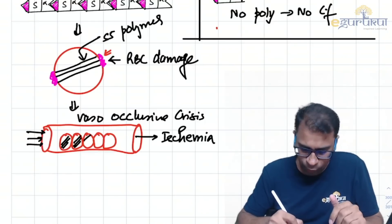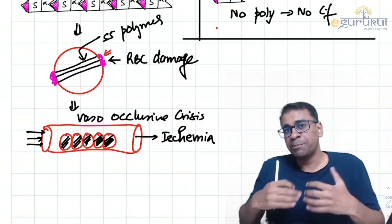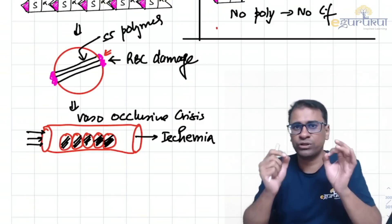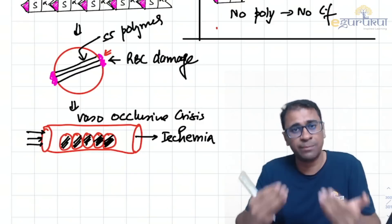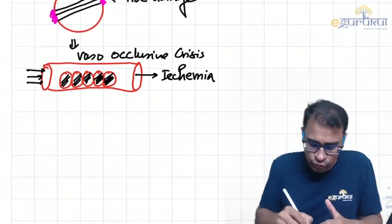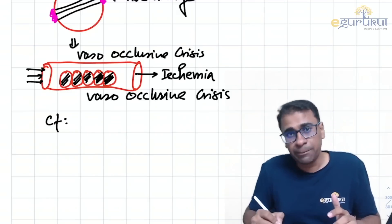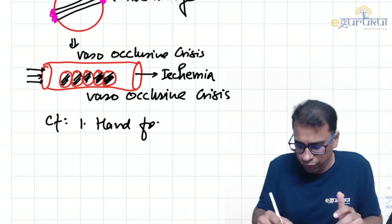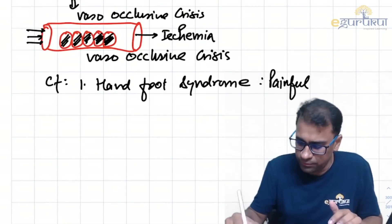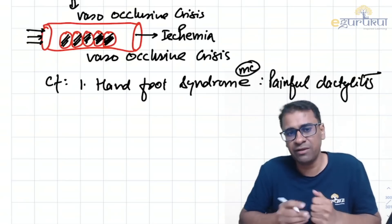Because of ischemia, there is pain especially in the small joints of the hand and foot — called painful dactylitis or hand-foot syndrome. This is clinically very important: the first presentation of sickle cell is often not hemolytic anemia but pain. Painful dactylitis is the most common symptom of sickle cell anemia.